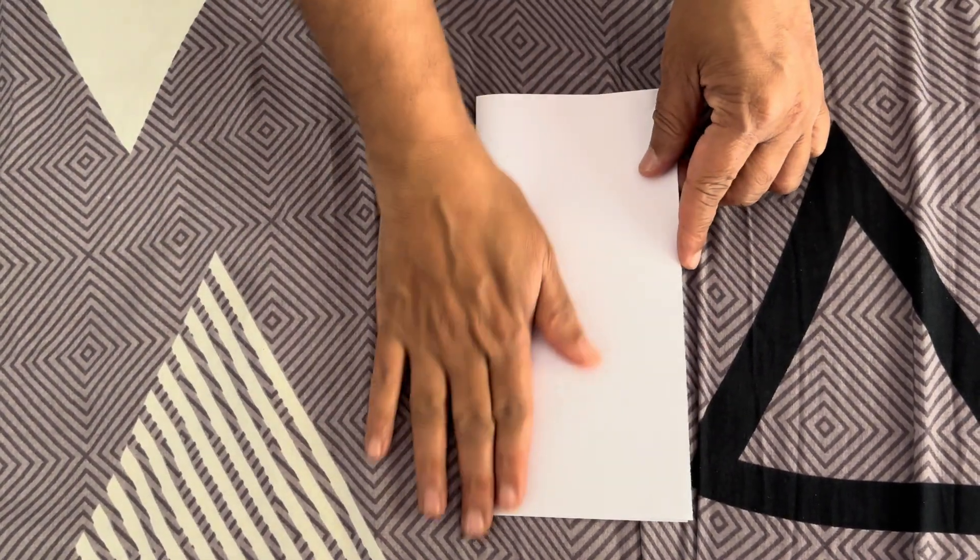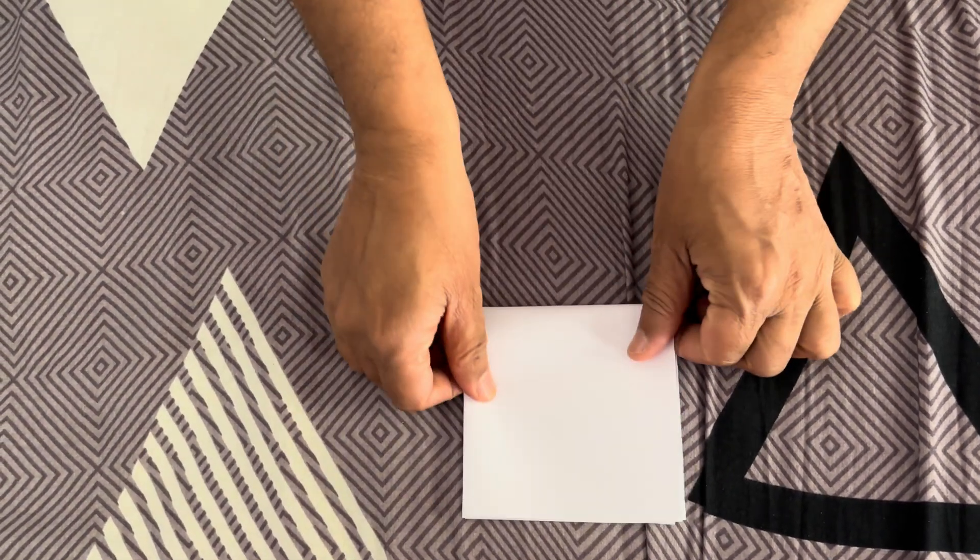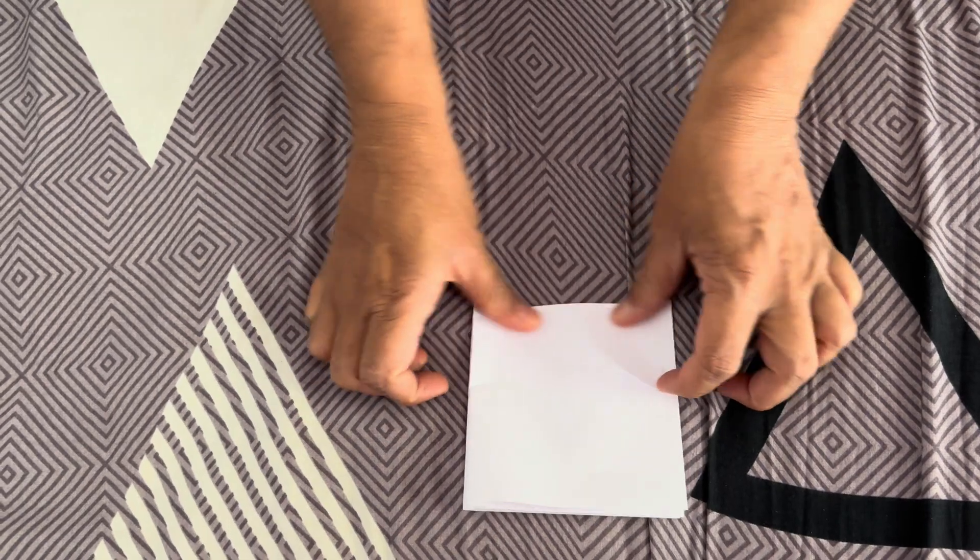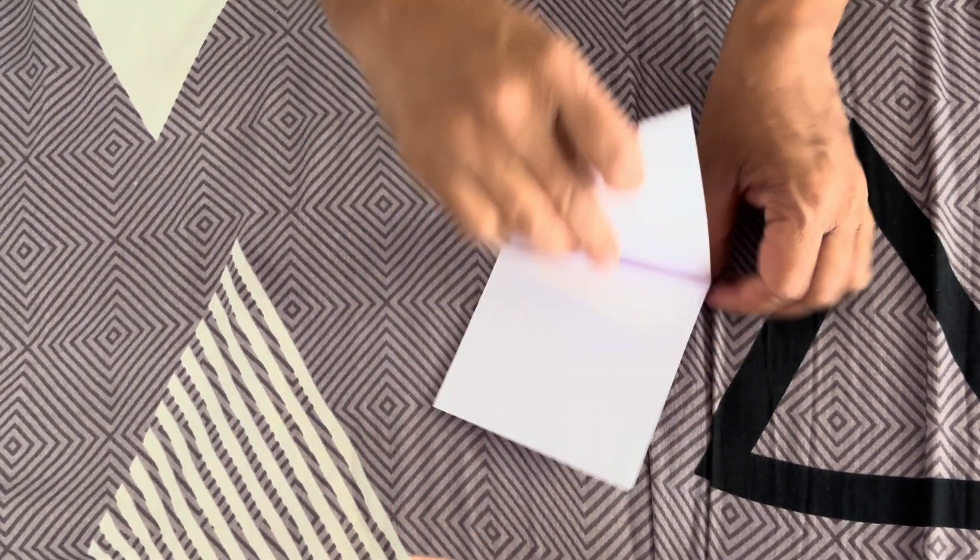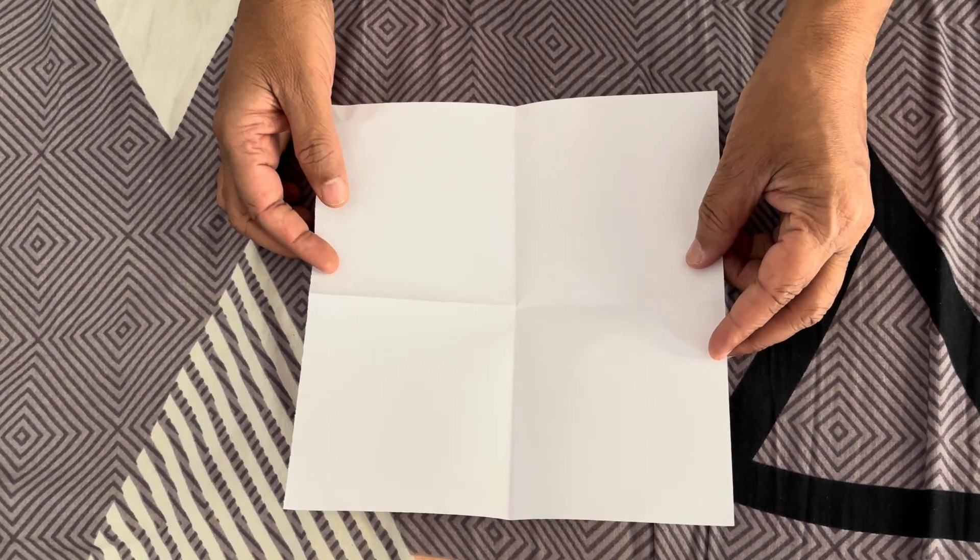Now let us say I want 2 to the power of 2. This is 1 fold and I will make another fold. Now I have made 2 folds. That is, 2 to the power of 2 will give me 4 divisions: 1, 2, 3, 4. So 2 to the power of 2 is 4.